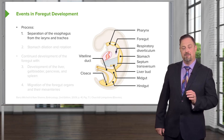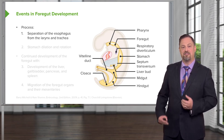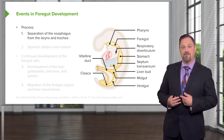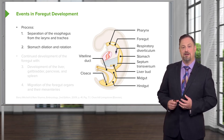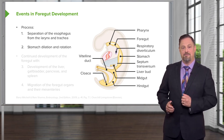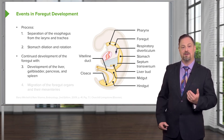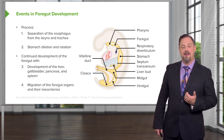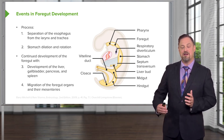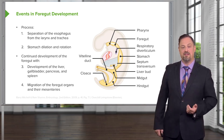In the process of foregut development we have to break it into multiple steps because there's quite a lot going on. In this talk we're going to look at how the esophagus separates from the airway — the larynx and trachea — and then follow how the stomach goes from a simple tube to ballooning out and rotating to create its mature shape. Subsequent talks will look at how the liver, gallbladder, pancreas, and spleen develop from outgrowths of the gut tube, and then how the foregut organs migrate as the liver, stomach, and other organs take their final position inside the abdominal cavity.